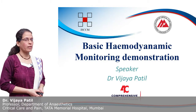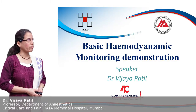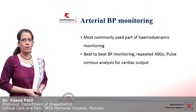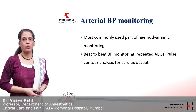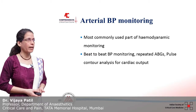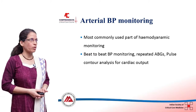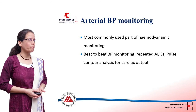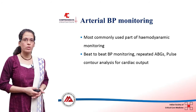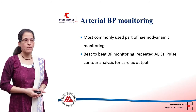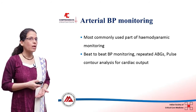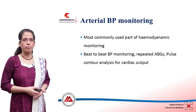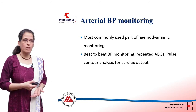We will start with arterial blood pressure monitoring — it is the most commonly used part of hemodynamic monitoring. Practically 90% of the times when we are doing hemodynamic monitoring, we use direct arterial pressure monitoring. The basic advantage is that it gives us beat-to-beat monitoring. You can use it for repeated arterial blood gas analysis sampling, and you can use non-invasive cardiac output monitoring with pulse contour analysis using just the arterial line.